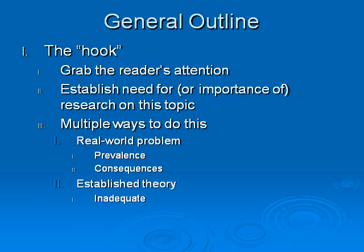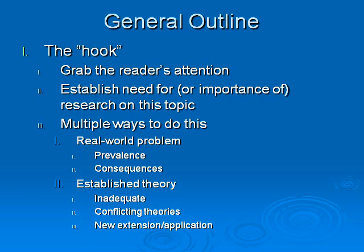Another approach — harder to do but maybe even better in terms of advancing science — is to talk about some established theory that relates to your question. It could be that you're going to argue the theory is inadequate and doesn't correctly account for some phenomenon or population you're interested in. It may be that there's more than one theory offering conflicting explanations about what will happen in some setting. Or it may be that there's some theory you're not looking to disprove, but rather to support, perhaps with a new extension or application — people have found this to be true, but no one's looked at it with this population or under these circumstances.